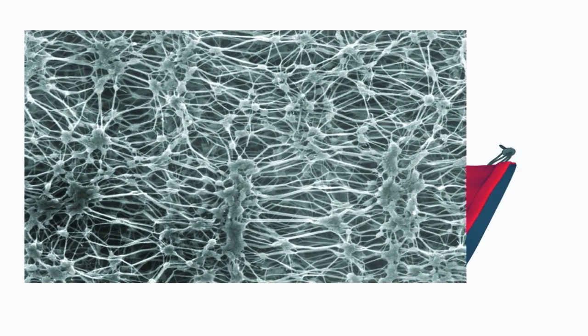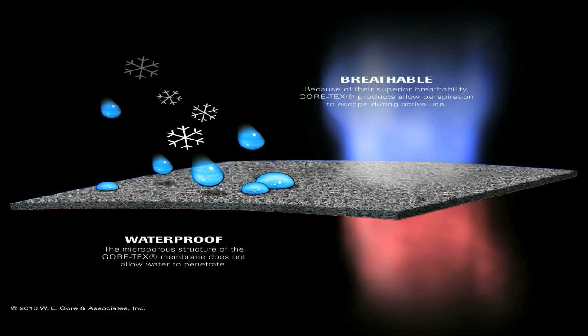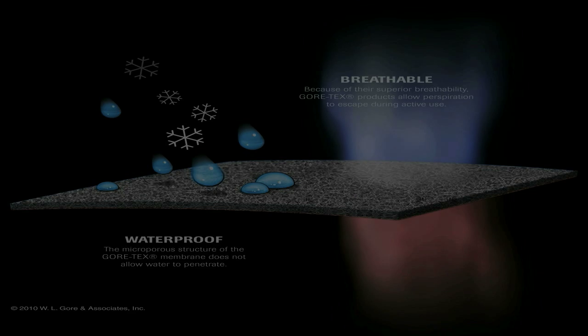The Gore-Tex membrane has pores that are big enough to let water vapor escape, so when you're on the verge of sweating, it's released through the fabric and out into the air.